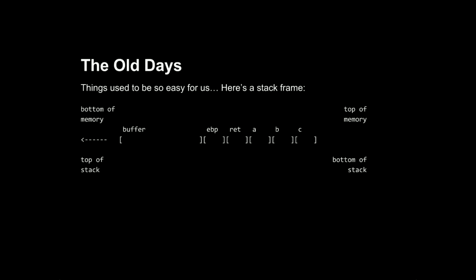Let's go way back to the old days — the wild, wild west of binaries. Things used to be super easy for us. Here's a stack frame. Hopefully everybody is familiar with what a stack frame looks like. This is just one stack frame on a stack. On the left side, that's the top of the stack. You've got local variables to that particular function call, maybe some saved registers like EBP — your saved stack pointer — then your return instructions, so wherever you came from, and then you have the arguments or parameters.